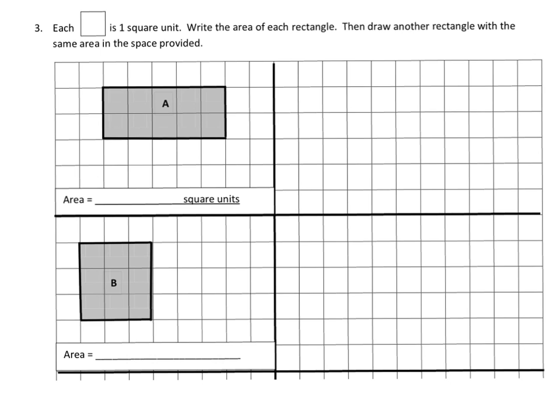The last slide says: each square is one square unit — write the area of each rectangle, then draw another rectangle with the same area. For the first one, counting one through ten — this rectangle has an area of ten square units. To draw another rectangle with ten square units, one way is to make a straight line: one, two, three, four, five, six, seven, eight, nine, ten. That counts as a rectangle, and teachers should know students may question this, but it does indeed count as a rectangle with ten square units.